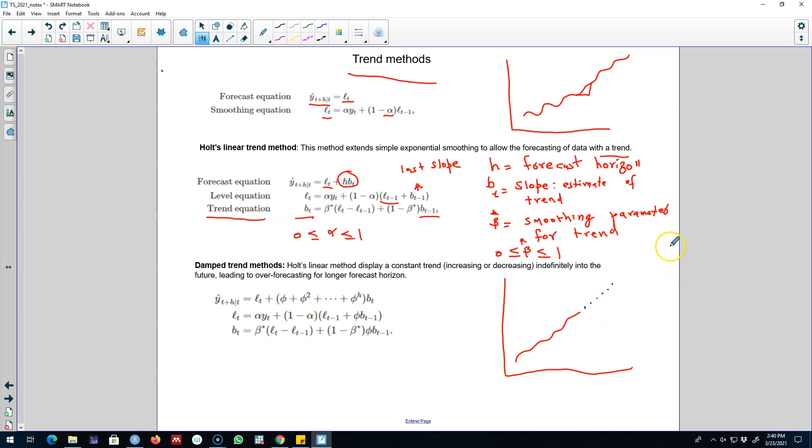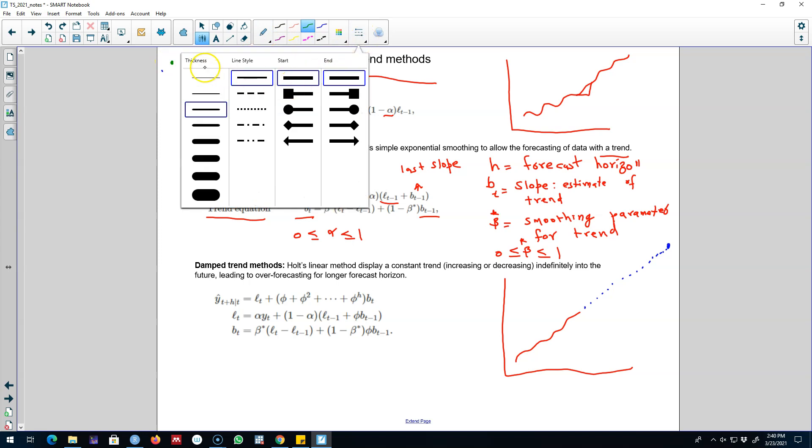for an observation which is way in the future, like this observation. We will probably forecast that it's going to be going in this time direction. So there may be a problem of over-forecasting in this case.